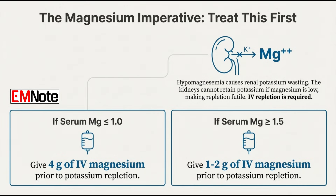The most critical pitfall here is the magnesium gatekeeper. If you're struggling to correct hypokalemia, here's the physiologic link: if magnesium is low, the kidneys actively waste potassium — the channels in the kidney tubules that are supposed to hold on to potassium become leaky and you just excrete it all. It's like filling a bathtub with the drain wide open. You cannot fix the potassium if you don't fix the magnesium first.